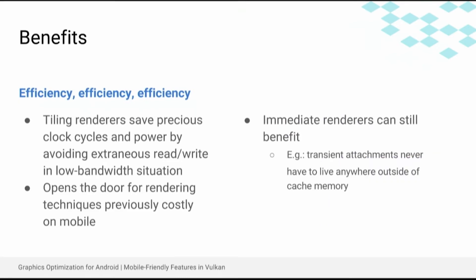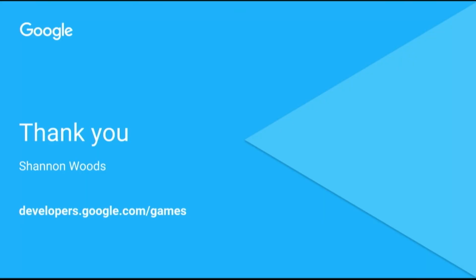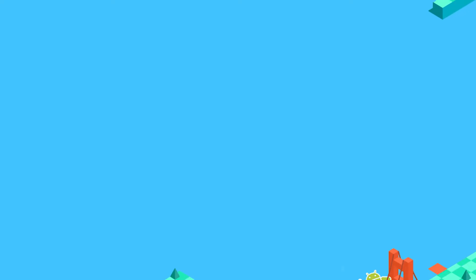The upside is this is efficient. Tiling renderers can save clock cycles and power by avoiding those off-chip read-writes, which opens the door for rendering techniques that were previously too costly on mobile devices. But mobile devices aren't the only ones that benefit — immediate renderers can still do things like avoid allocating memory outside of the cache for transient attachments. So armed with this knowledge, I hope you get out there and draw things fast. Thanks.